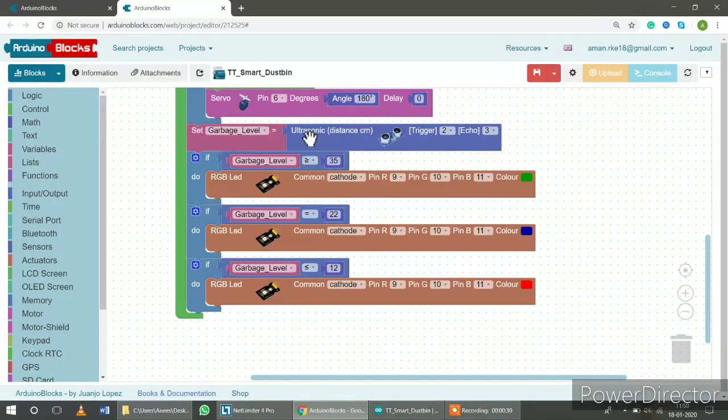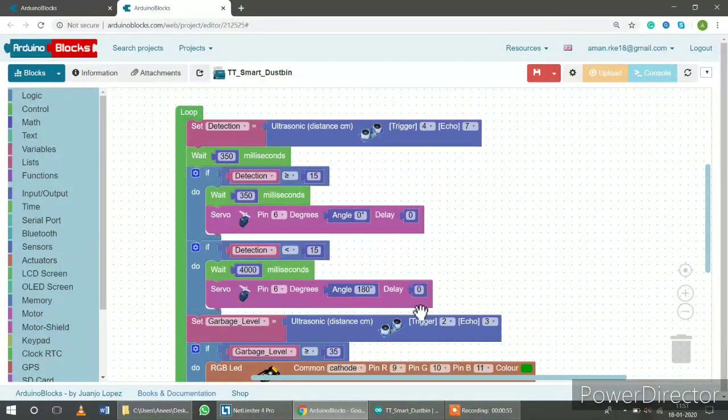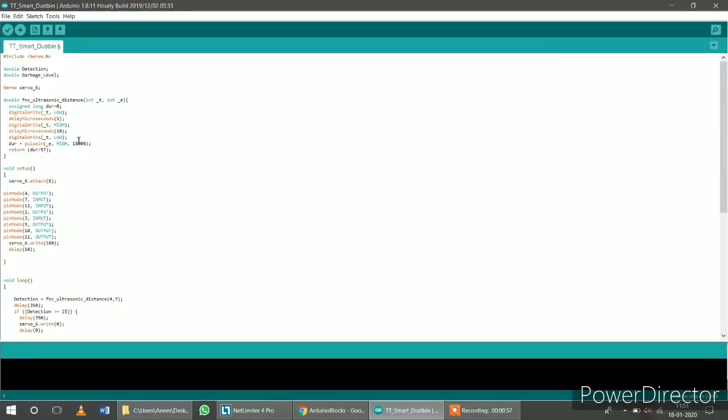For garbage level detection, we are using three different ranges. First condition is empty dustbin and the range is greater than or equal to 35 centimeters. You can see here in the program. If this condition gets satisfied, automatically the green LED will glow. And the same logic is applied in half filled and full dustbin cases where the ranges are 22 centimeters and less than or equal to 12 centimeters.